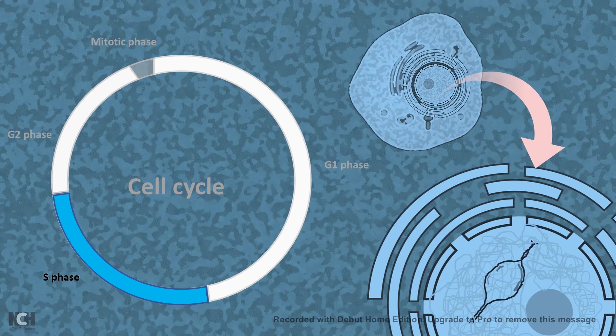Think of transcription. Transcription can go on and on multiple times, right? But why can't replication go on and on?